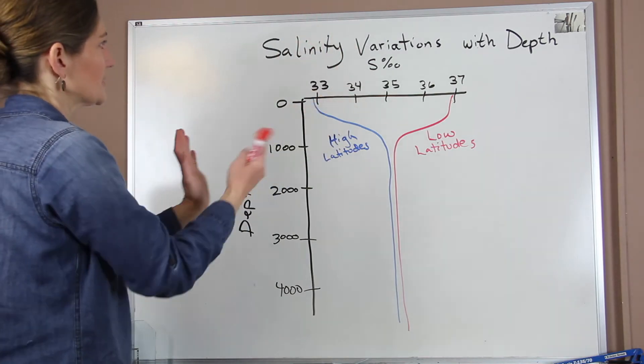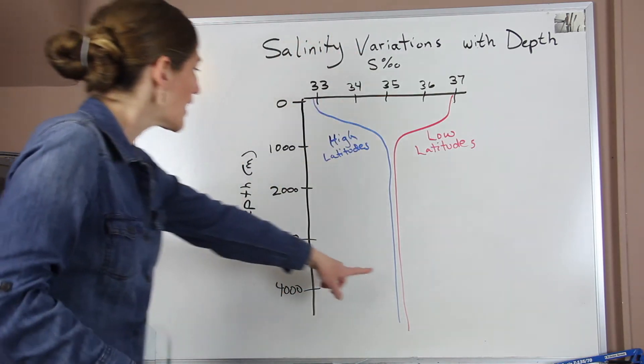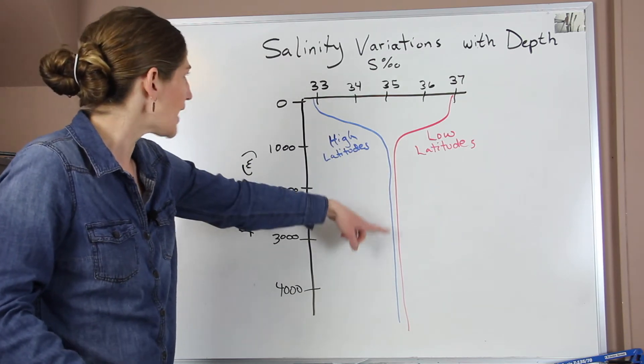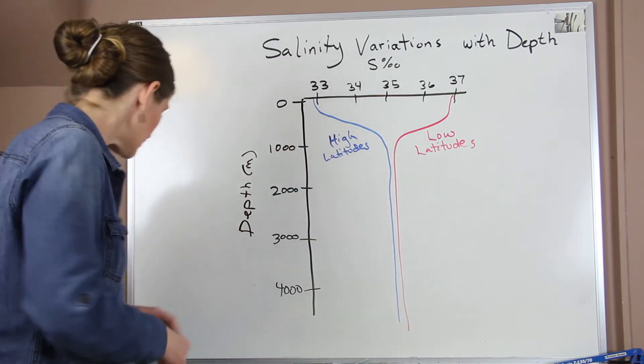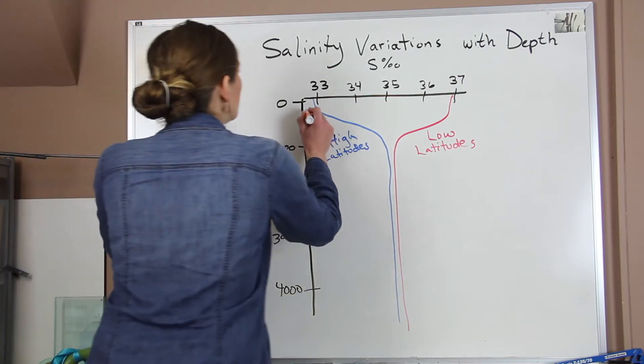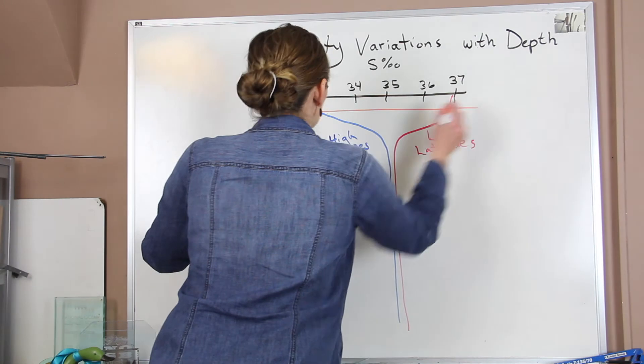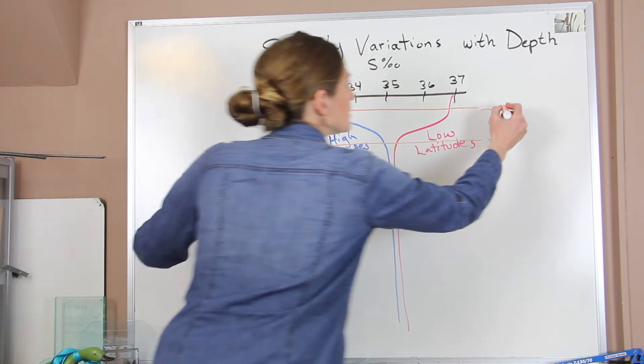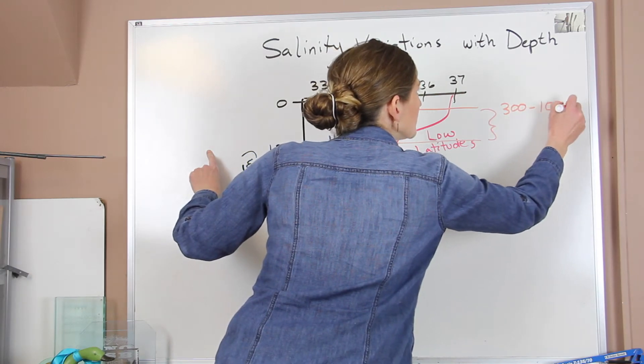So we get this shape where these two curves kind of come together and they both approach 35 parts per thousand with depth. So this change occurs right about at a thousand meters. And so between right through here, between this area, this is about 300 to 1000 meters,